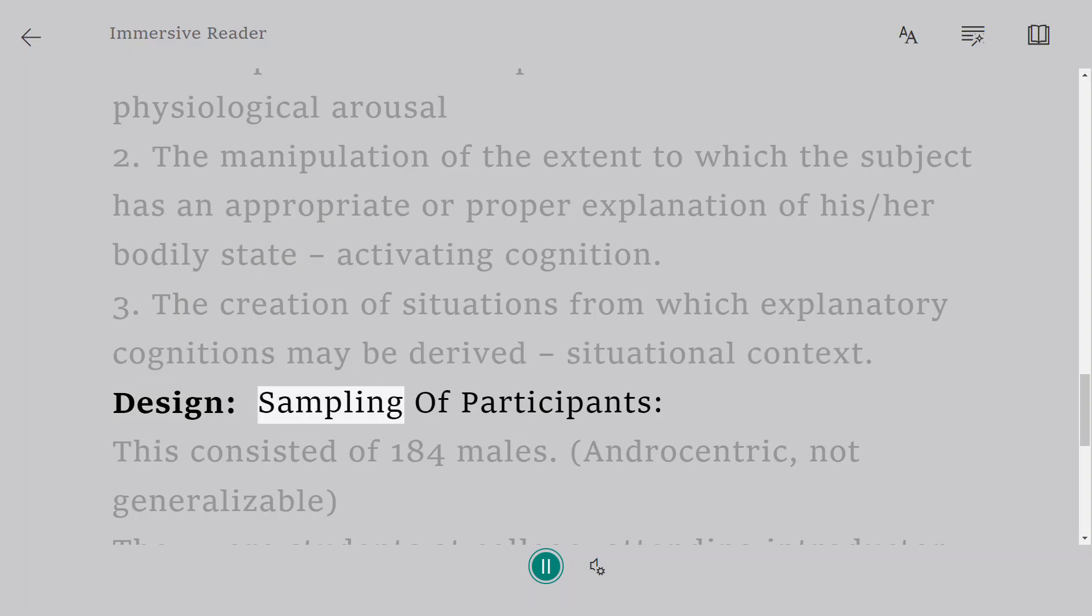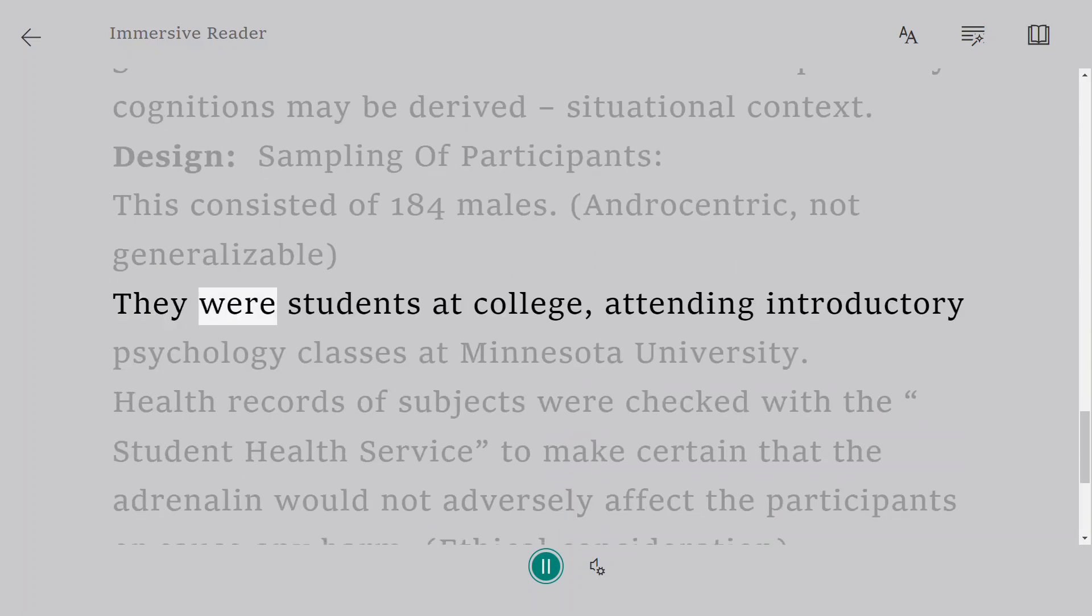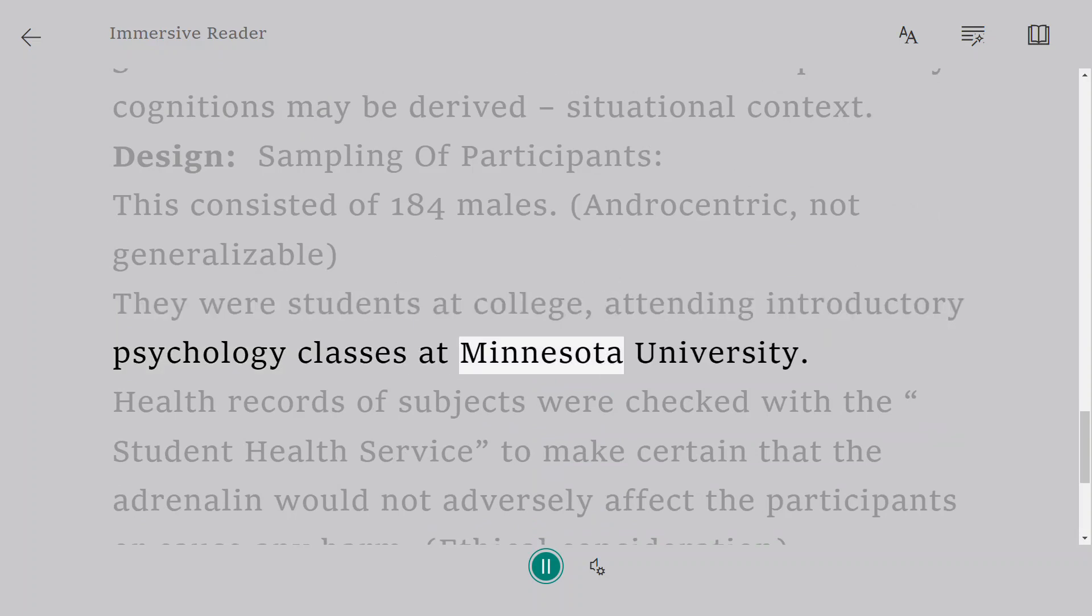Design, sampling of participants: This consisted of 184 males (androcentric, not generalizable). They were students at college attending introductory psychology classes at Minnesota University.